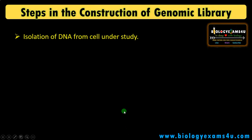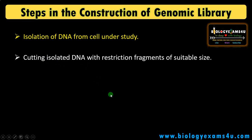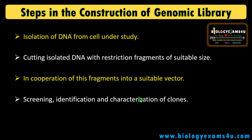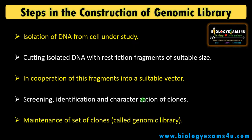Let me summarize the steps in the construction of a genomic library. First, isolate the genomic DNA from the cell under study — it can be from virus, bacteria, animals, plant cells, etc. Then cut the isolated DNA using a suitable restriction enzyme into suitable-sized fragments. Then incorporate these fragments into a suitable vector, followed by screening, identification, and characterization of clones after transformation or introduction of this vector into a suitable host. Finally, maintenance of such a set of clones containing cloned DNA fragments of that particular organism under study is called a genomic library.